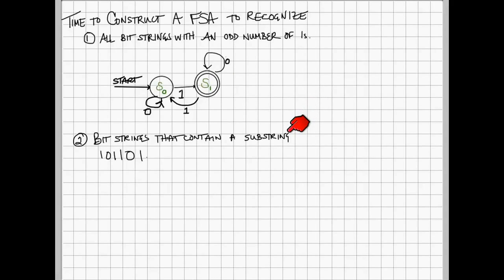The second question was a little bit trickier. We wanted to have a particular bit string, in this case 101101, to be identified by our automata.